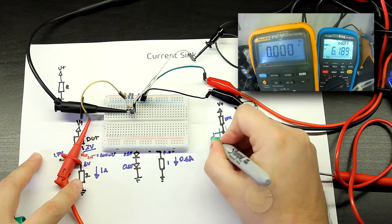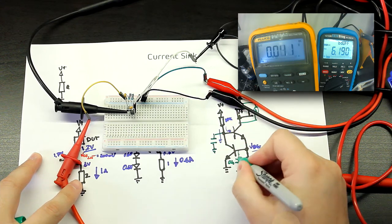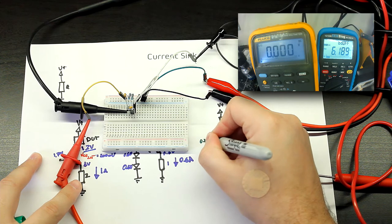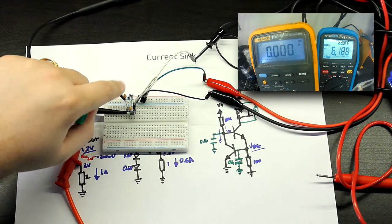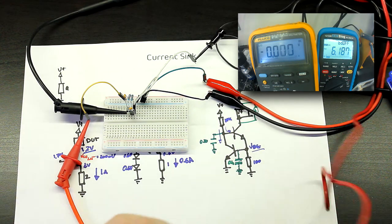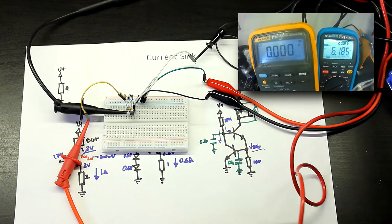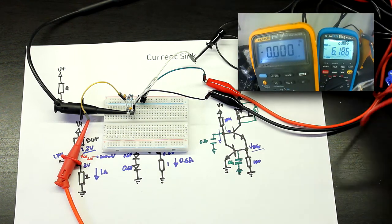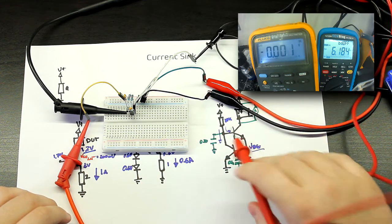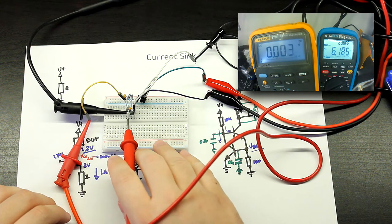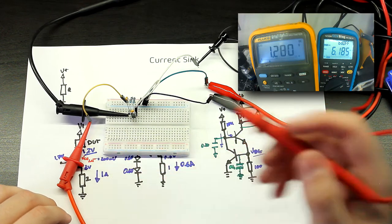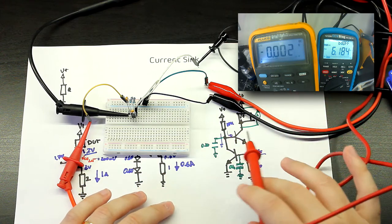What I had to do is add another capacitor here - just a 0.1 microfarad. Now let's probe this node right here, which should have two VBEs, so around 1.2 to 1.3 volts. And if we probe this point, we get 1.28. So everything that we've discussed before still holds true.